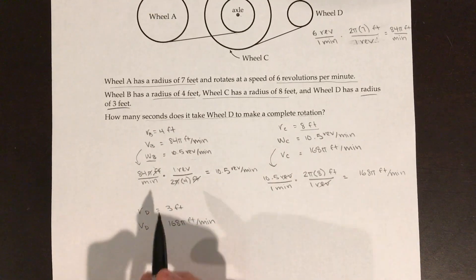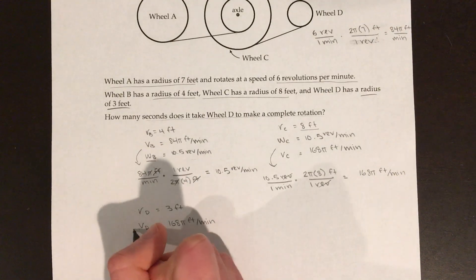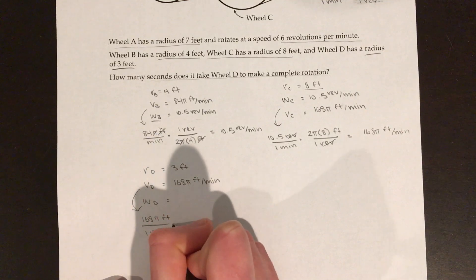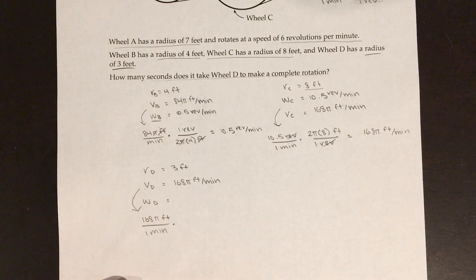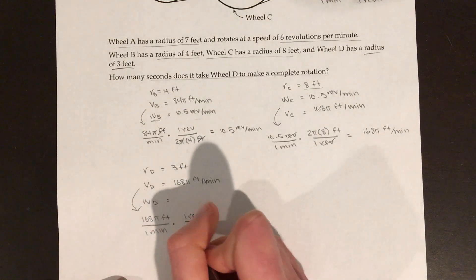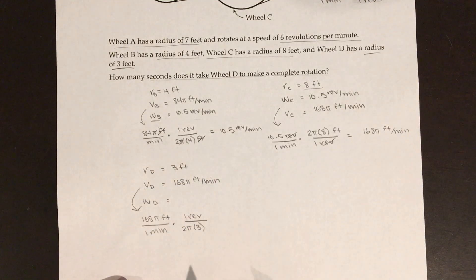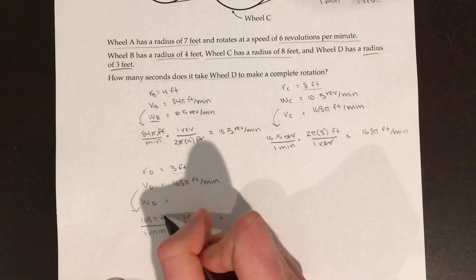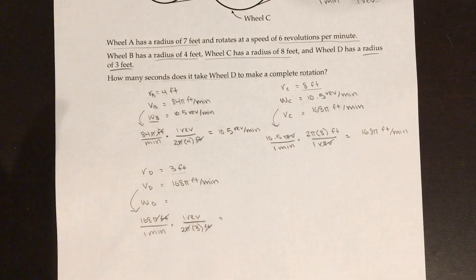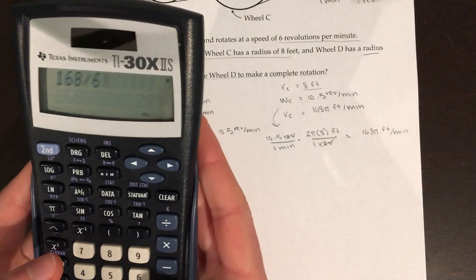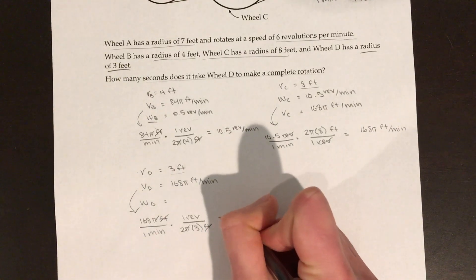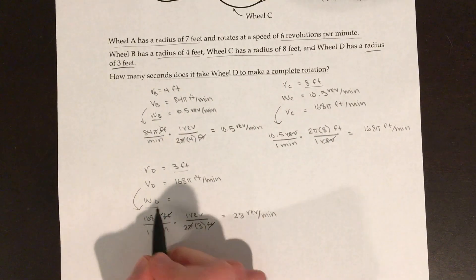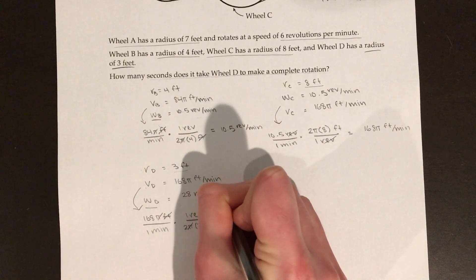Now I have the radius (R) and linear speed (V) for wheel D, so I just need to find omega. Starting with 168π feet per minute, I multiply by the conversion factor: one revolution equals 2π×3 feet (the circumference of wheel D, radius 3 feet). The pi's cancel, the units cancel, and I do 168 divided by 6, which equals 28. So the angular speed of wheel D is 28 revolutions per minute.